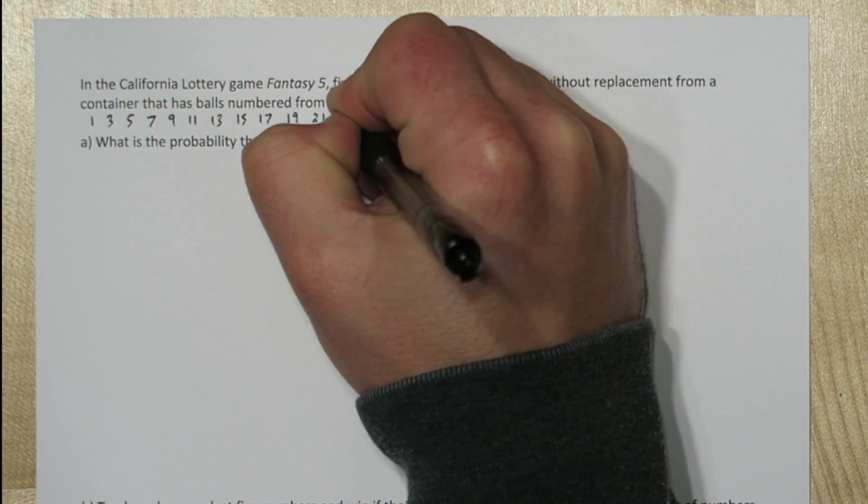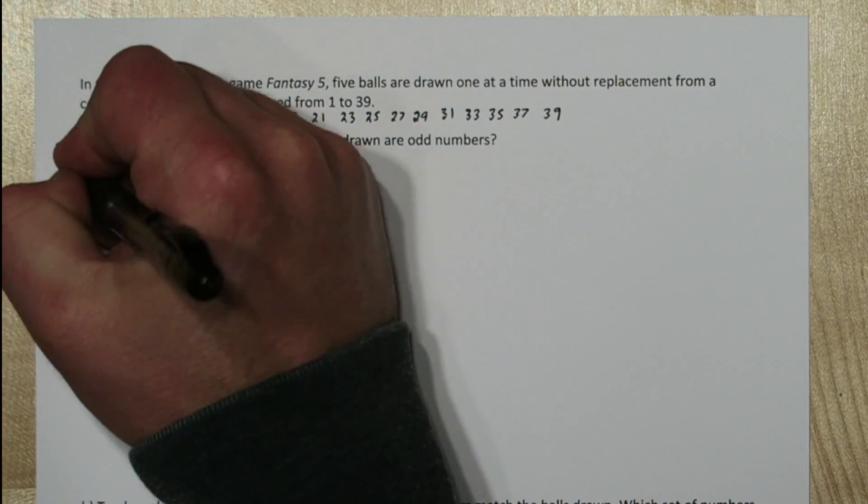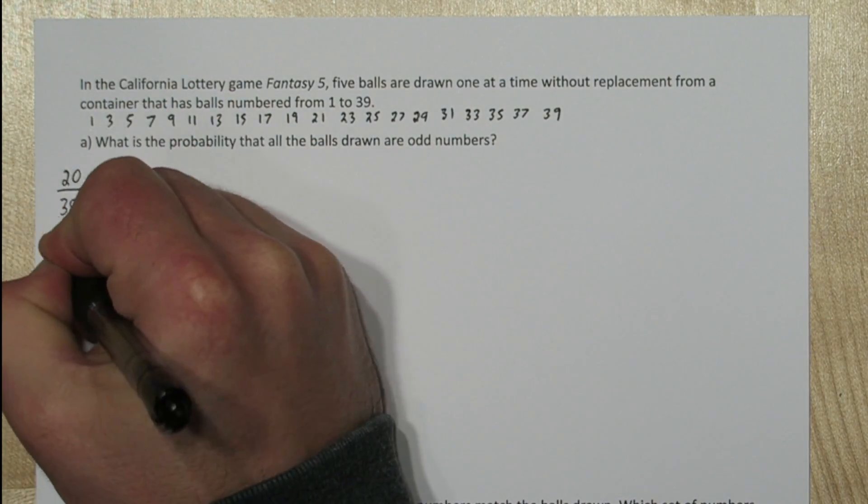There's actually 20 odd numbers between 1 and 39, so the probability that the first number selected is odd is 20 out of 39.